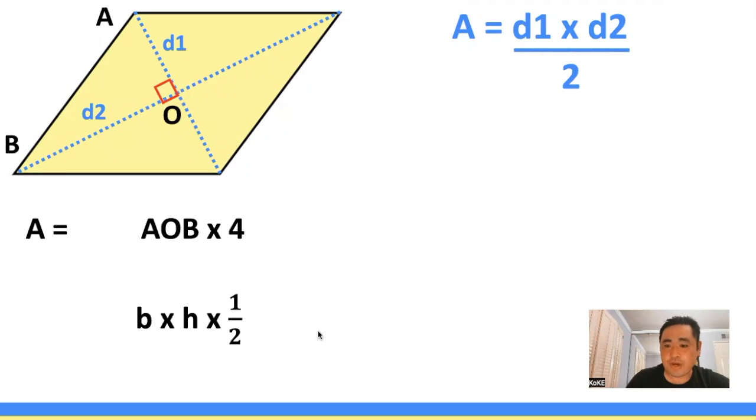And just to recap the triangle area formula, your base is going to be your D2 times your height, which is D1 times a half, or divided by 2.